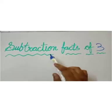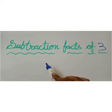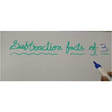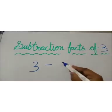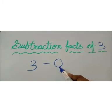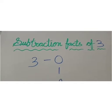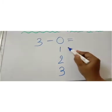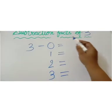Now let's learn subtraction facts of 3. Here I give you 1 trick. If you want to do subtraction facts of 3, write down 3 first, then minus, and start with 0. Then write down the next number after: 0, then 1, then 2, then 3. Then put the equal sign. We want subtraction facts of 3, so write down 3, put minus.